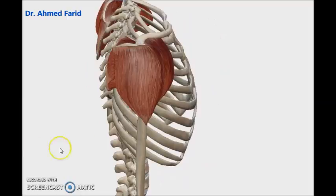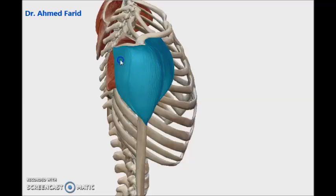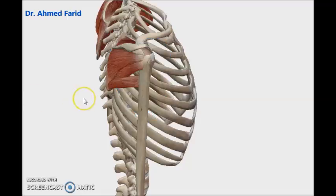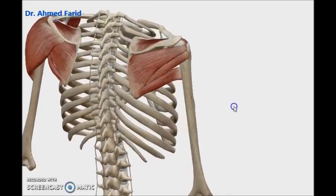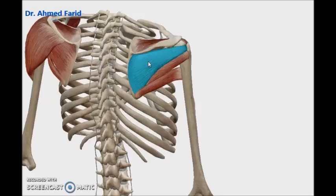We have firstly a superficial muscle called the deltoid muscle, with its anterior fibers, middle fibers, and posterior fibers. And if we hide this muscle, we will find the rest of the muscles. Anteriorly, I have a muscle called the subscapularis muscle. And posteriorly, I have the rest of the scapular region muscles, namely supraspinatus above the spine of the scapula, infraspinatus below the spine of the scapula, teres minor, and finally teres major muscle.